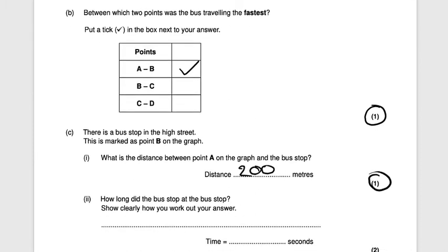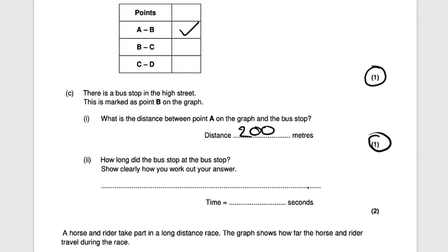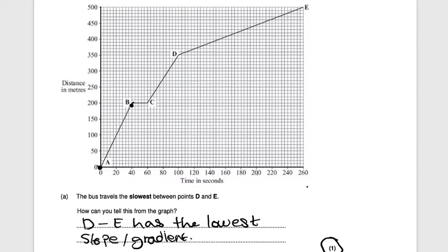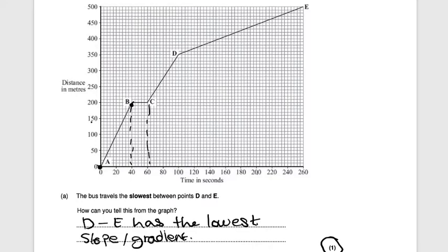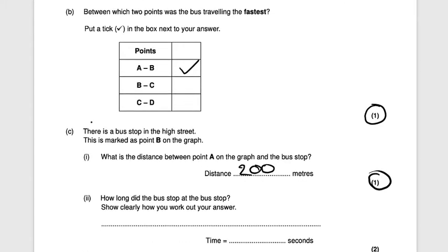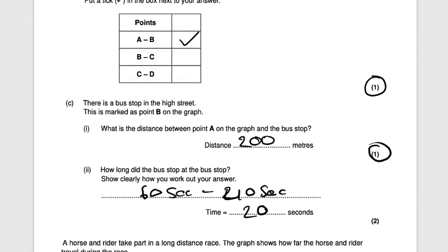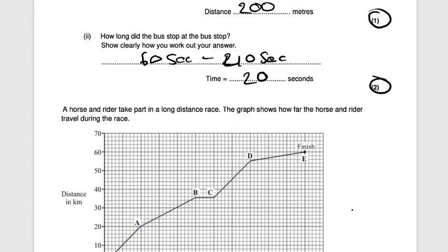How long did the bus stop at the bus stop? This is worth two marks, so show your working clearly. There is a flat line from 40 seconds to 60 seconds at the bus stop. The calculation is 60 seconds minus 40 seconds, giving an answer of 20 seconds — two marks.